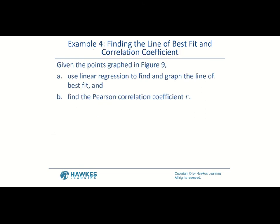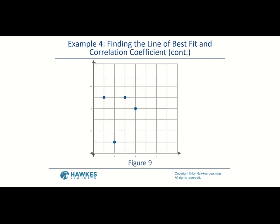Let's run through another example quickly — again finding the line of best fit and looking at R using linear regression. Looking at the graph, we have four points: (1, 5), (2, 1), (3, 5), and (4, 4).